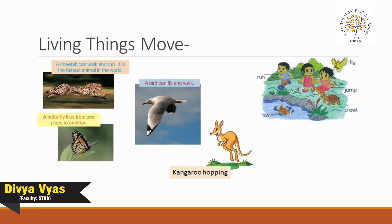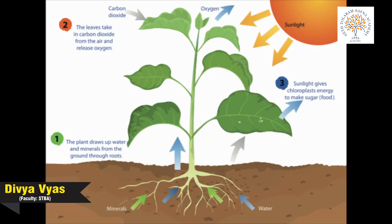Our third feature is that living things move. Animals can move about in different ways — they can run, jump, leap, crawl, or swim. Plants grow in one place and cannot walk around like us, but certain parts of a plant do move.